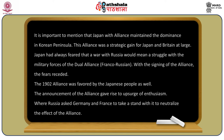Japan with the alliance maintained dominance in the Korean peninsula. The alliance was a strategic gain for both Japan and Britain. Japan had always feared that a war with Russia would mean a struggle against the dual alliance of France and Russia; with the signing of the Anglo-Japanese alliance, those fears receded. The 1902 alliance was also favored by the Japanese people, and the announcement gave rise to a surge of enthusiasm. Russia asked Germany and France to take a stand with it to neutralize the effect of the alliance.